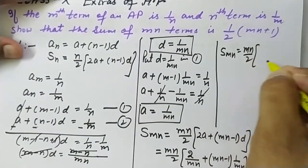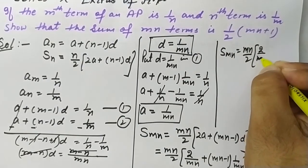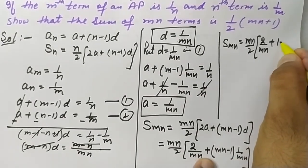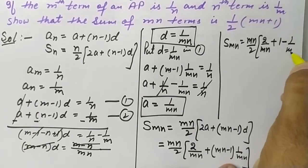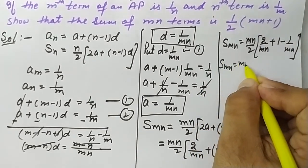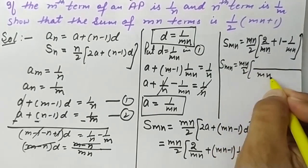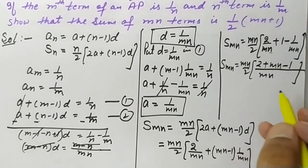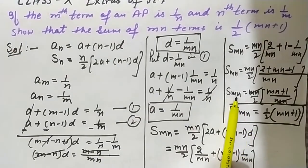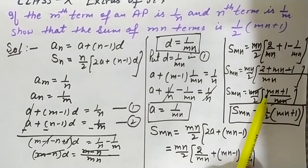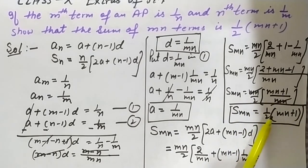Simplifying inside the brackets: 2/mn + (mn - 1)/mn. Taking mn as the common denominator: (2 + mn - 1)/mn = (mn + 1)/mn. So S(mn) = mn/2 × (mn + 1)/mn. The mn terms cancel, giving S(mn) = (mn + 1)/2. This is what we needed to prove.